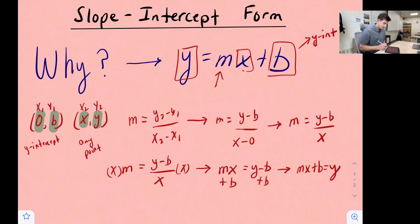And that is how we can derive or get to the slope-intercept form equation from the points (0, b) and (x, y).